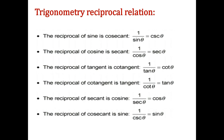Trigonometric Reciprocal Relations: The reciprocal of sine theta is cosecant theta, written as 1 by sine theta equals cosecant theta. The reciprocal of cos theta is secant theta, written as 1 by cos theta equals secant theta. The reciprocal of tan theta is cot theta, written as 1 by tan theta equals cot theta.